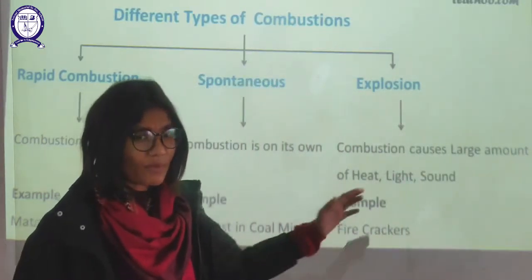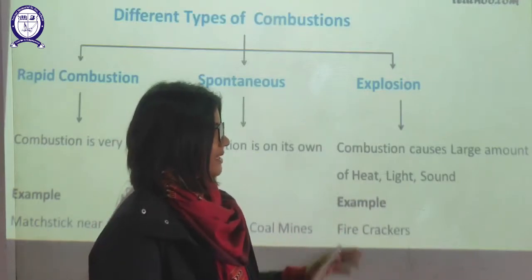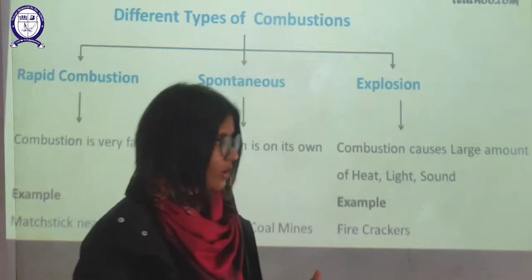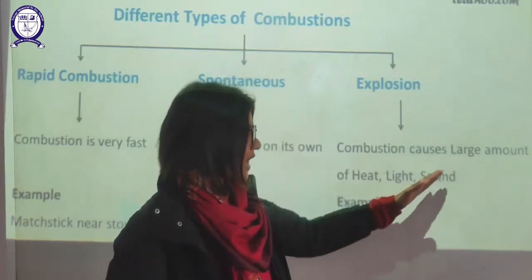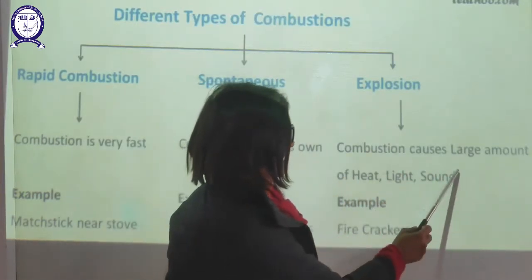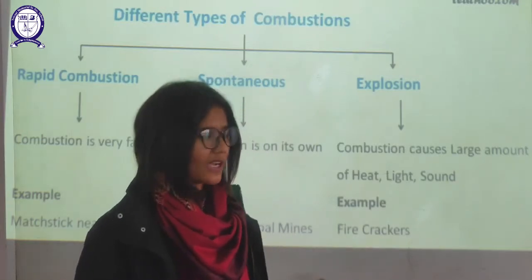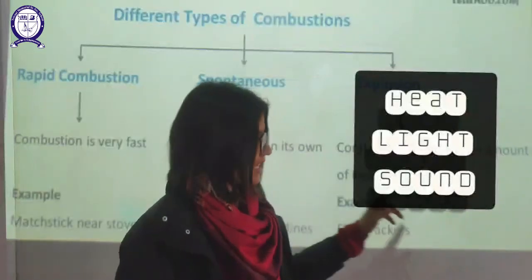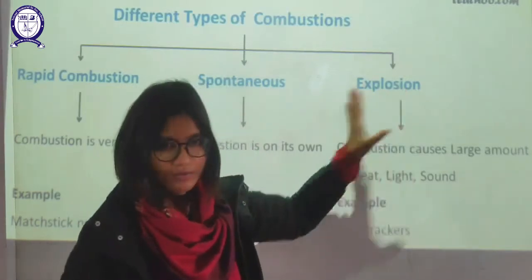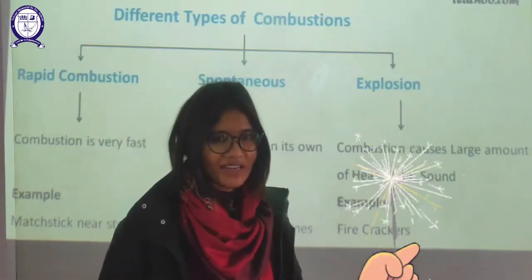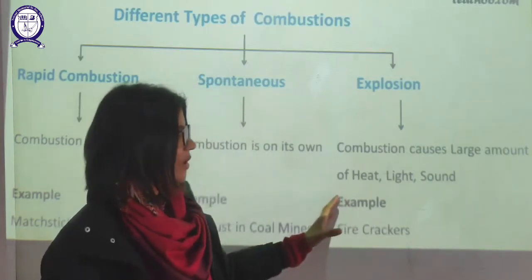The third type of combustion is explosive combustion. Explosive combustion basically means the kind of combustion which leads to generation of a large amount of energy — way too high compared to the previous two — with a very high amount of heat, energy, and sound. We can call any kind of combustion explosive combustion if we observe these three things: heat, light, and sound. The burning of firecrackers and explosive materials such as an atomic bomb are all examples of explosive combustion.